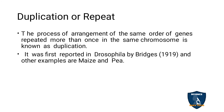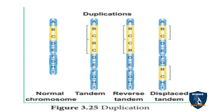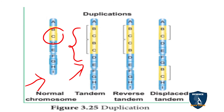Next, duplication or repeat. You can see a normal chromosome here. In the first type of duplication, segments B and C are repeated two times — a repeat that takes place in the middle. This is called tandem duplication, where the same genes are repeated in a straight order. In reverse tandem, the repeated segment appears in reverse order: A, B, C, C, B.